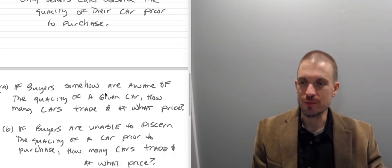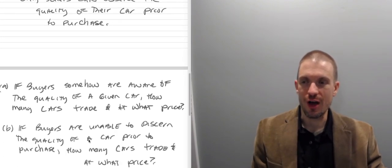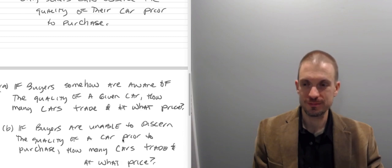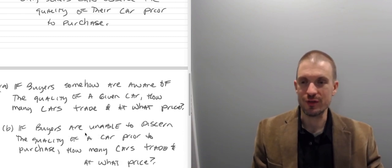And then part two, part B, if buyers are unable to discern the quality of a car before purchase, how many cars trade and what will be the price? So this is where there's asymmetric information in part B. Buyers have no idea what's a good car and what's a bad car.